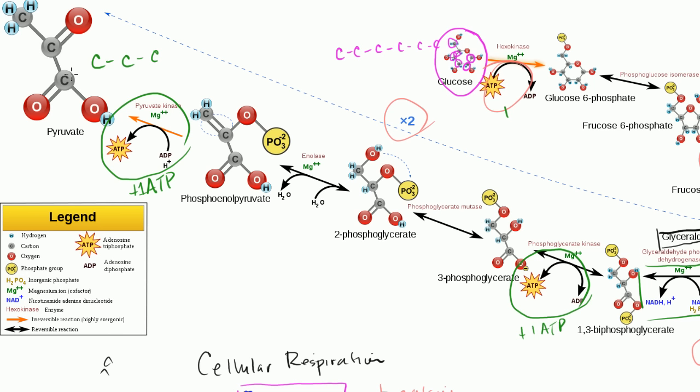And in the process, we were able to generate two net ATPs and two NADHs that can later be used to produce ATPs.